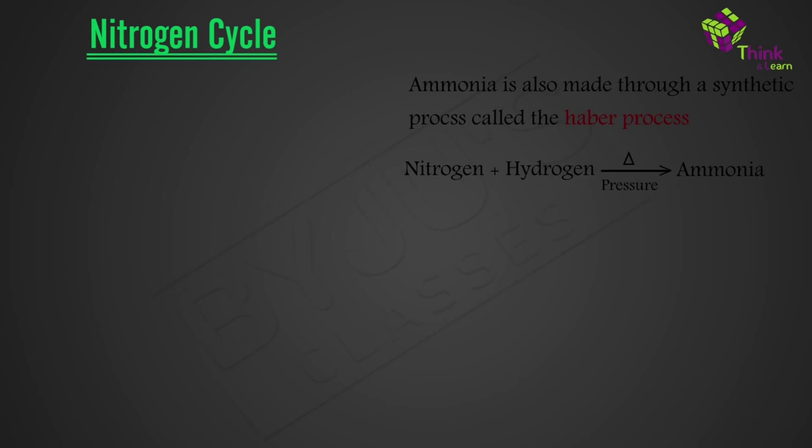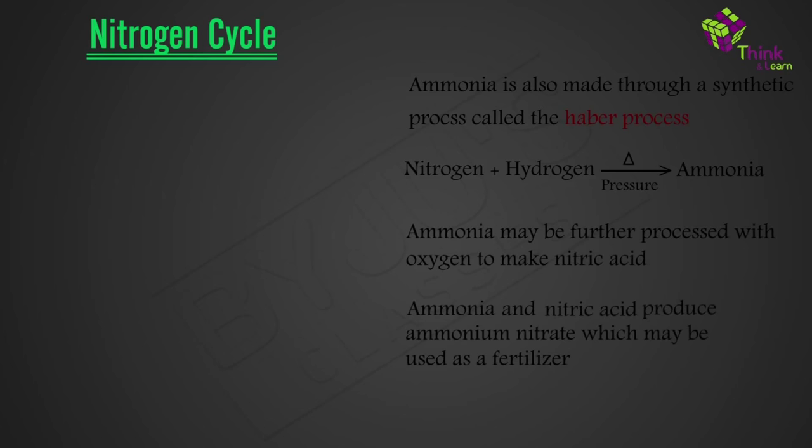Ammonia may be directly applied to farm fields as fertilizers. Ammonia may be further processed with oxygen to make nitric acid. The reaction of ammonia and nitric acid produces ammonium nitrate, which may be then used as a fertilizer. Animal waste, when decomposed, also returns to the earth as nitrates to complete the cycle.